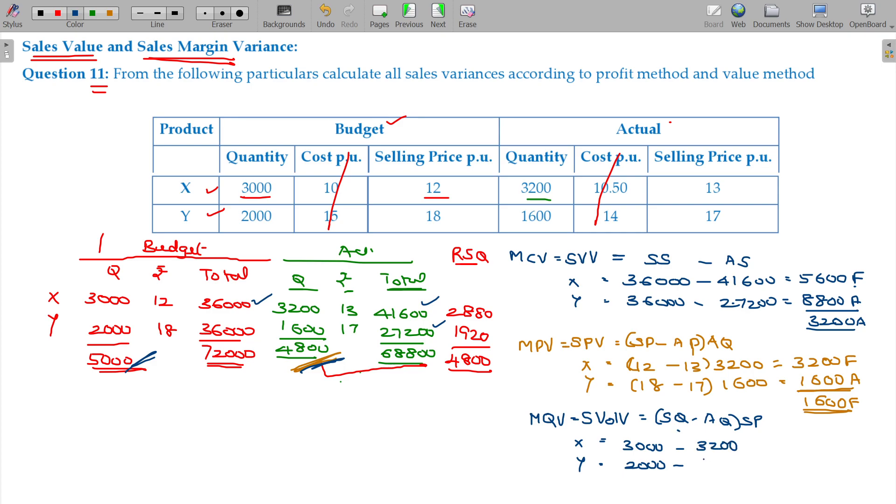For sales volume variance, standard price is 12 and 18. We sold 200 excess, so 200 into 12 gives 2,400 favorable. And we sold 400 less at 18, giving 7,200 adverse. The ultimate value is 4,800 adverse. If you add price and volume, you get the cost variance.